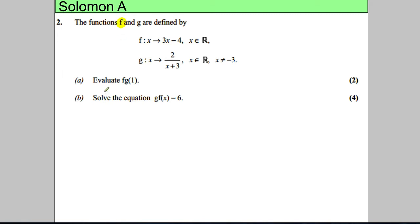In this question we've got a function f and it's a linear function, and the domain is x can be any number. We've got a function also g, and it's 2 over x add 3, and x can be any number but x can't be negative 3, obviously, because otherwise the denominator will be 0 and the function will be undefined.